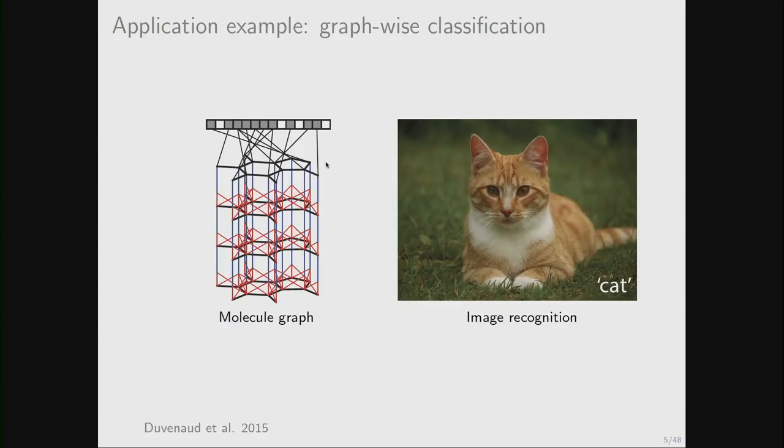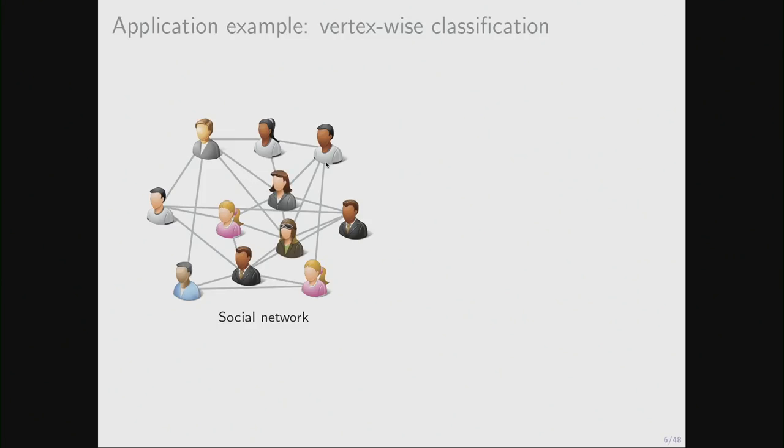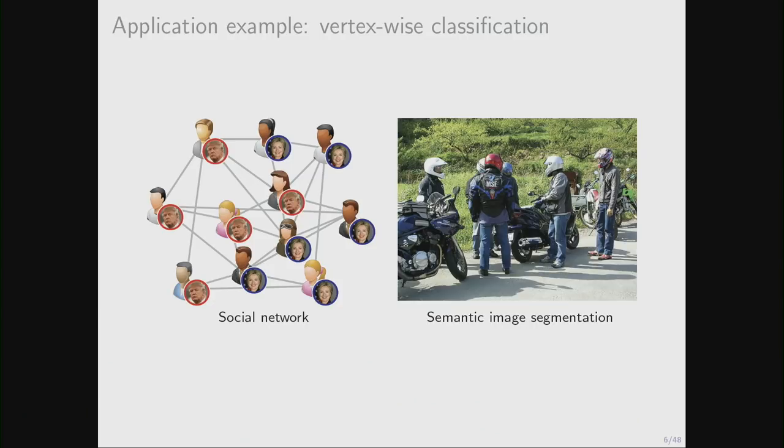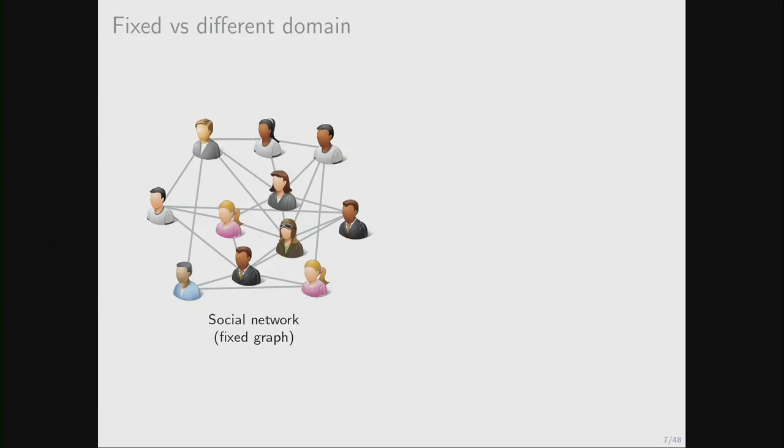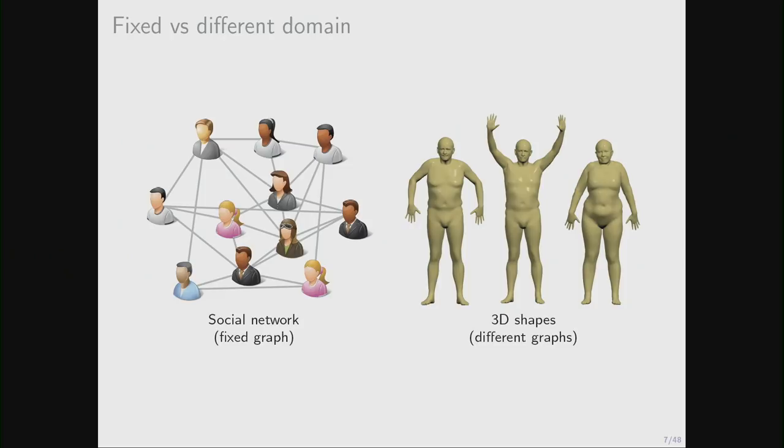So if we take an analogy, make an analogy to some problems in computer vision, this is like object classification. I want to tell that this image contains a cat. Another type of problems are vertex-wise classification. For example, if we are in a social network and we have some demographic data about the users, we would like to predict the way they voted in the past elections. So again, an analogy to computer vision, it's like semantic segmentation. We want to label each pixel in the image, whether it belongs to background, foreground, whether it's person, car, etc.